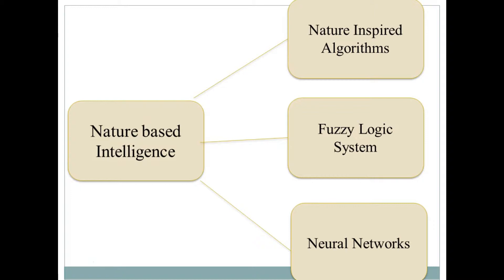Nature-based intelligence and computational intelligence both possess a common feature: if a problem is given, they both mimic a natural system or a natural process to construct a solution which is optimal both in terms of quality and robustness. Nature-based intelligence is something which is already implicit in nature inspired algorithms — we can find it in fuzzy logic systems, artificial neural networks, support vector machines, and so on.